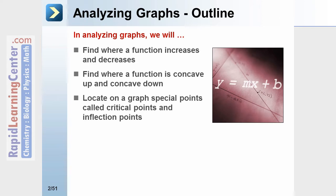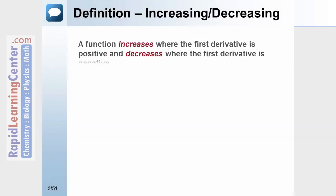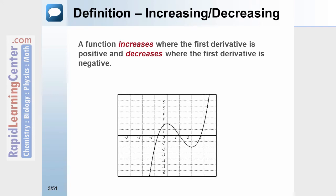The definition of increasing and decreasing: a function increases where the first derivative is positive, and it decreases where the first derivative is negative. Let's take a look at the graph, which shows in red the two intervals where the first derivative would be positive.